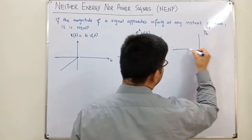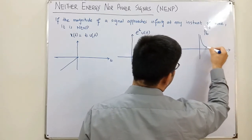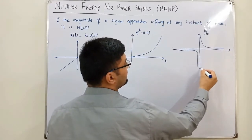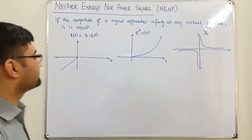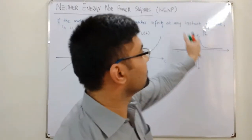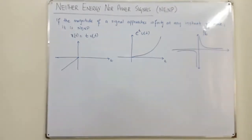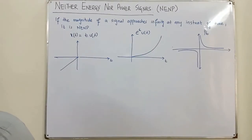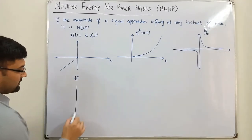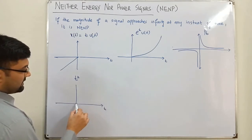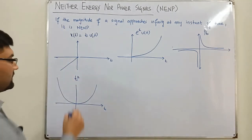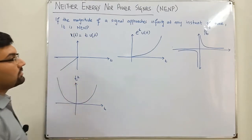The function 1/t is located in the first and third quadrant. Have a look — the magnitude is reaching infinity on both sides. Similarly, a parabola t² is a quadratic equation, and have a look — it is approaching infinity as well. So these are all neither energy nor power signals.